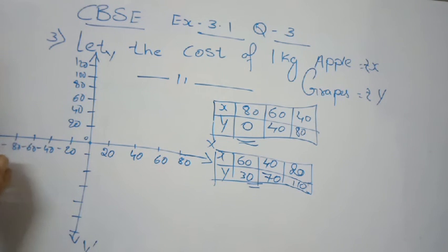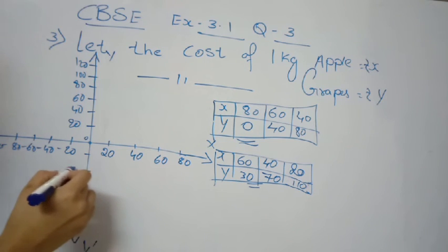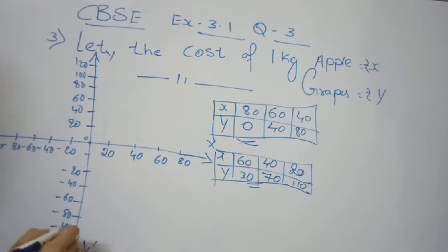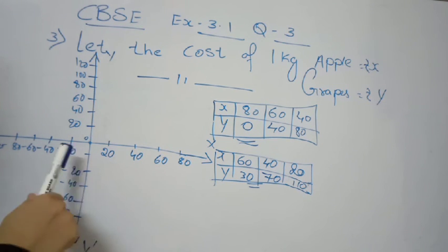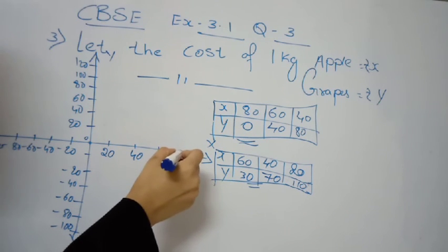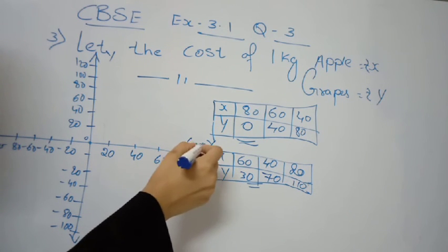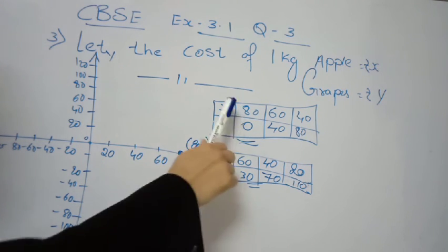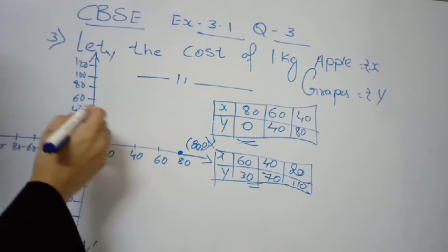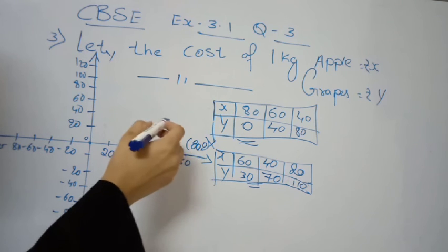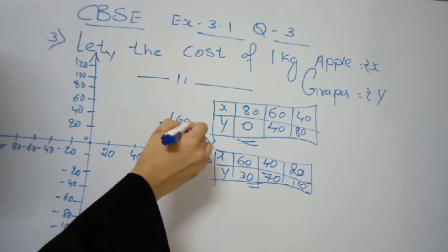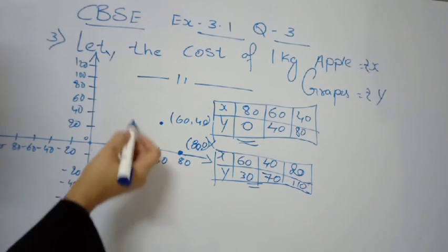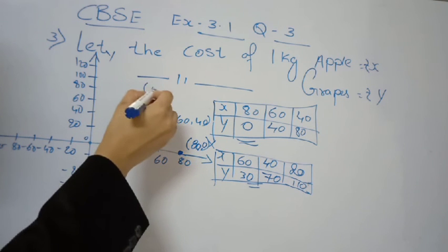For the first condition, plot the points. When x is 80 and y is 0, mark the point (80, 0) on the x-axis. When x is 60 and y is 40, mark the point (60, 40). When x is 40 and y is 80, mark the point (40, 80). Connect these points to get the line representing the first equation 2x plus y equals 160.